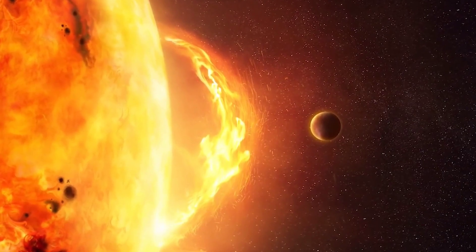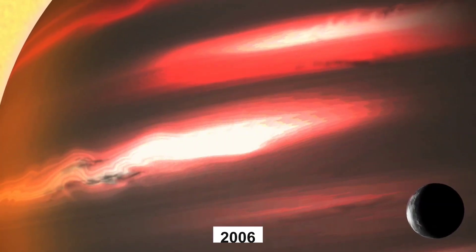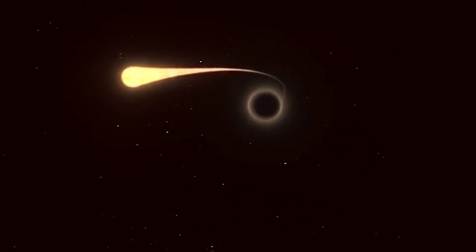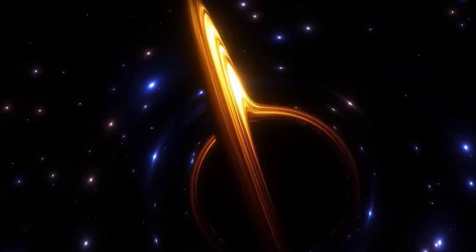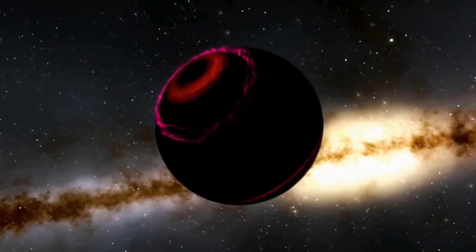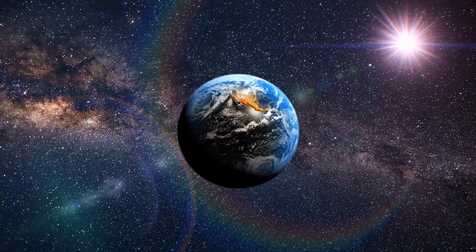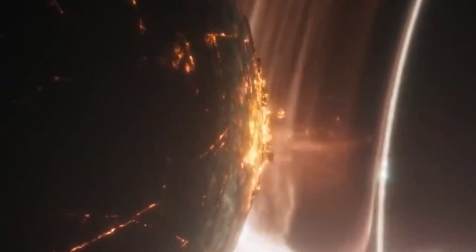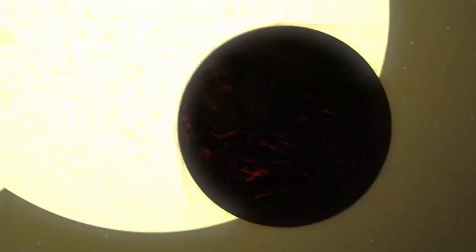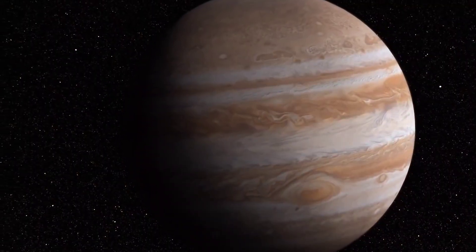The next exoplanet is the TRES-2b. TRES-2b, an exoplanet found in 2006 by the Transatlantic Exoplanet Survey (TRES), is recognized for being darker than coal. It is formed in the constellation Draco, around 750 light-years from Earth. TRES-2b is a gas giant with a mass and size very similar to Jupiter, but it orbits its parent star very closely, making it a hot Jupiter.